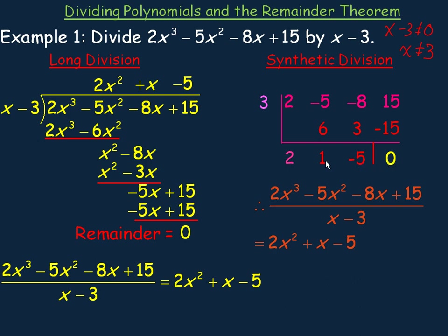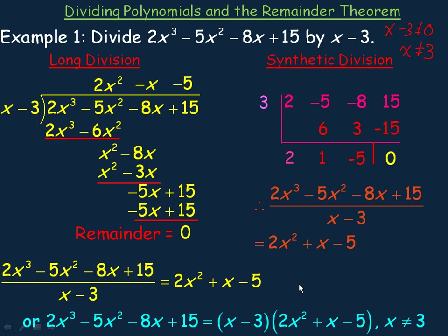After reading the remainder, the coefficients go in order: constant, coefficient of x, coefficient of x², x³, x⁴, and so on. The division statement can be written as 2x³ minus 5x² minus 8x plus 15 divided by x minus 3 equals 2x² plus x minus 5. Alternatively, the original polynomial equals the product of x minus 3 and 2x² plus x minus 5, with the restriction that x cannot equal 3.